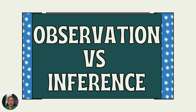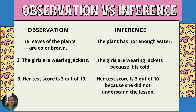For a better understanding, let's differentiate observation and inference using examples. Observation: 'The leaves of the plants are brown.' Inference: 'The plant does not have enough water.' Based on observing brown leaves, you formulate the inference that the plant lacks water. Next: observation — 'The girls are wearing jackets.' Inference — 'The girls are wearing jackets because it is cold.' Third: observation — 'Her test score is 3 out of 10.' Inference — 'Her test score is 3 out of 10 because she did not understand the lesson.'